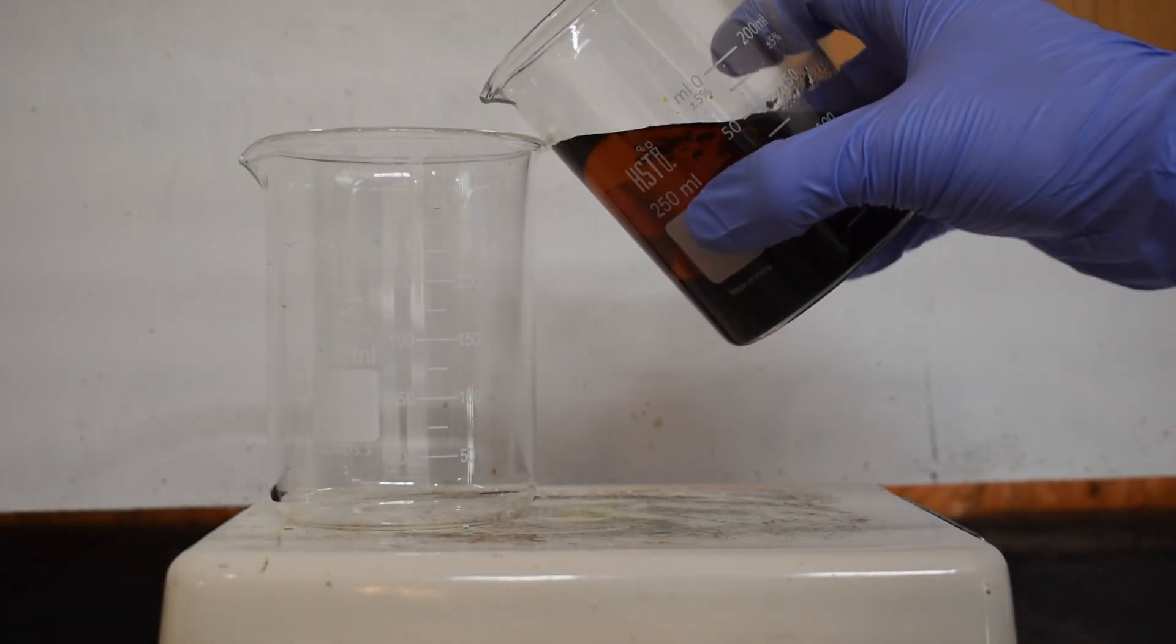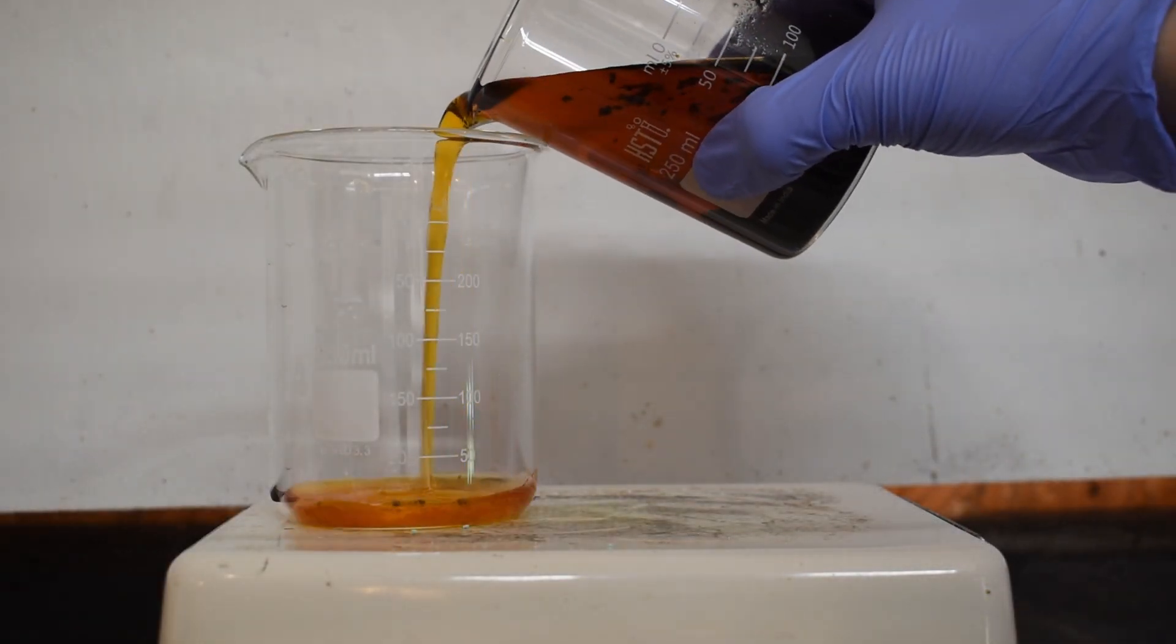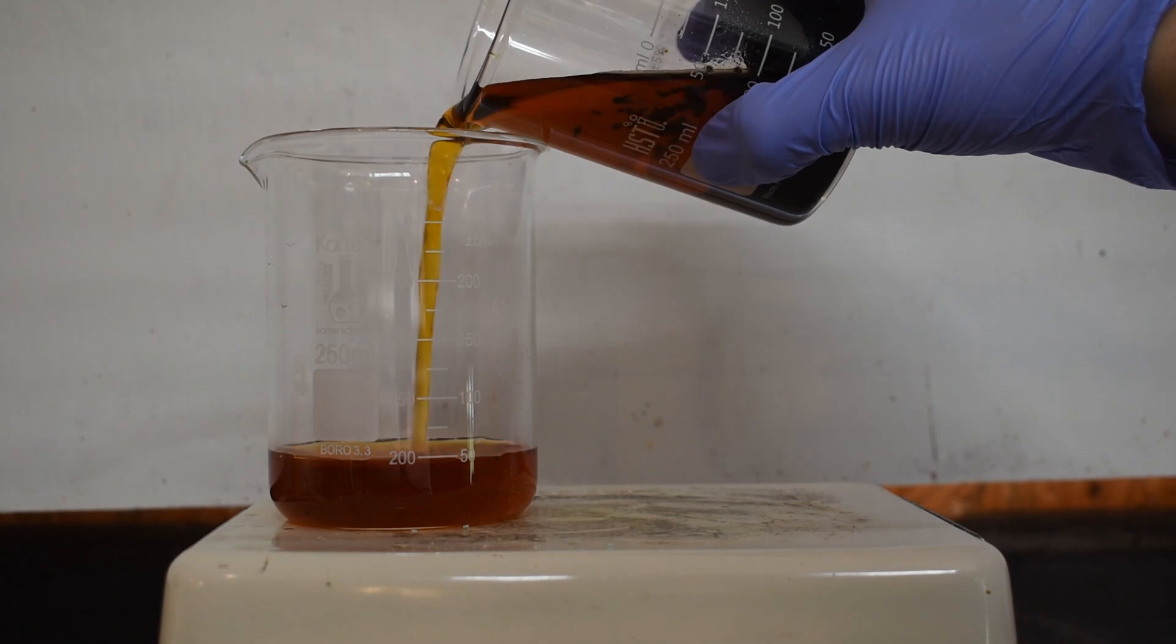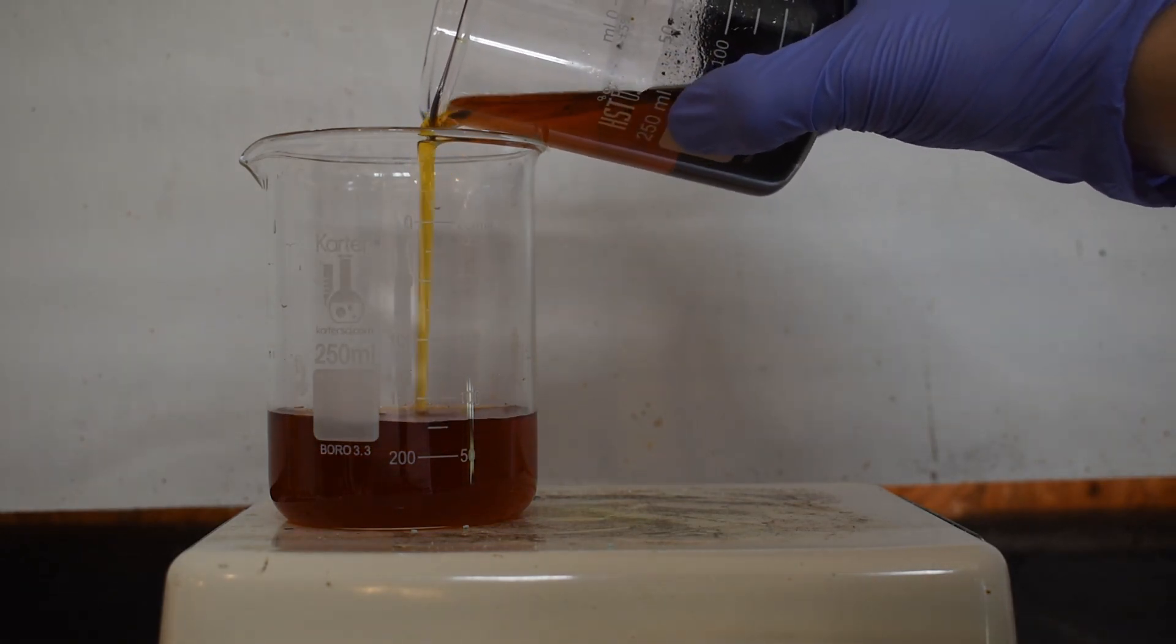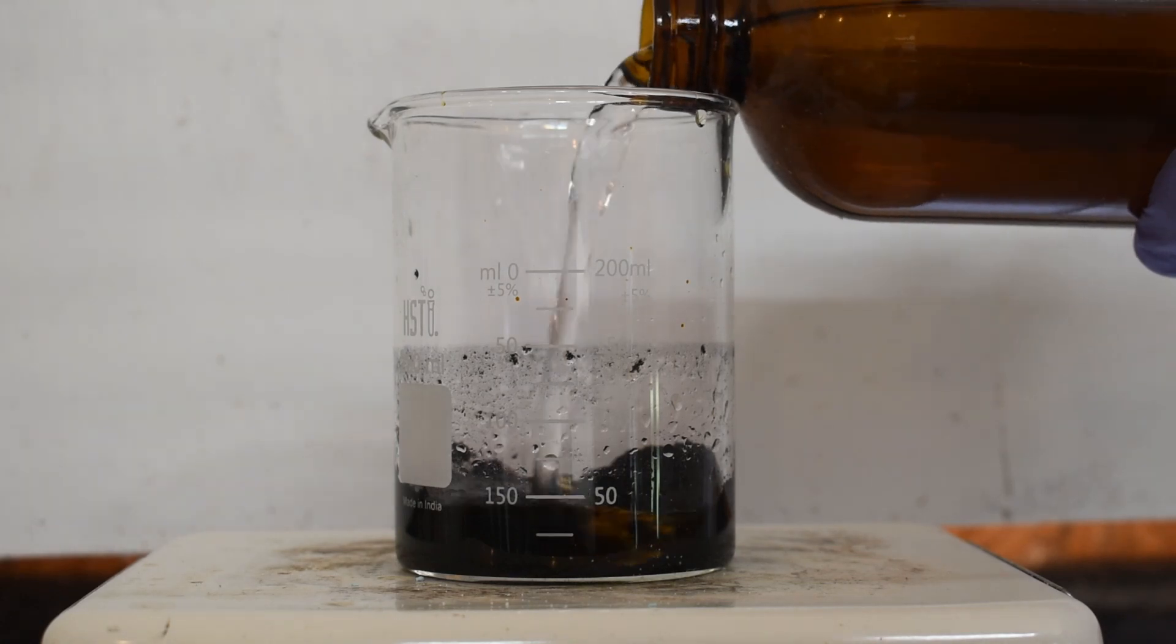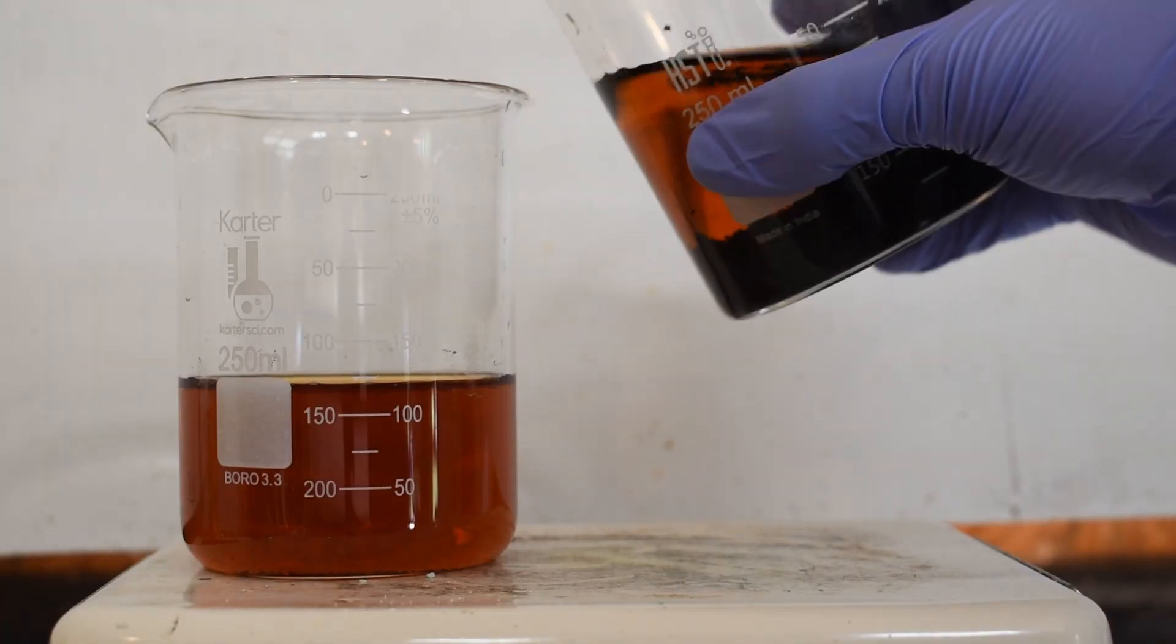I then poured the top layer of water off of the solid iodine that precipitated out and then I began rinsing it a few times with more water. This will help get rid of any hydrochloric acid or hydroiodic acid left over as well as any hydrogen peroxide.